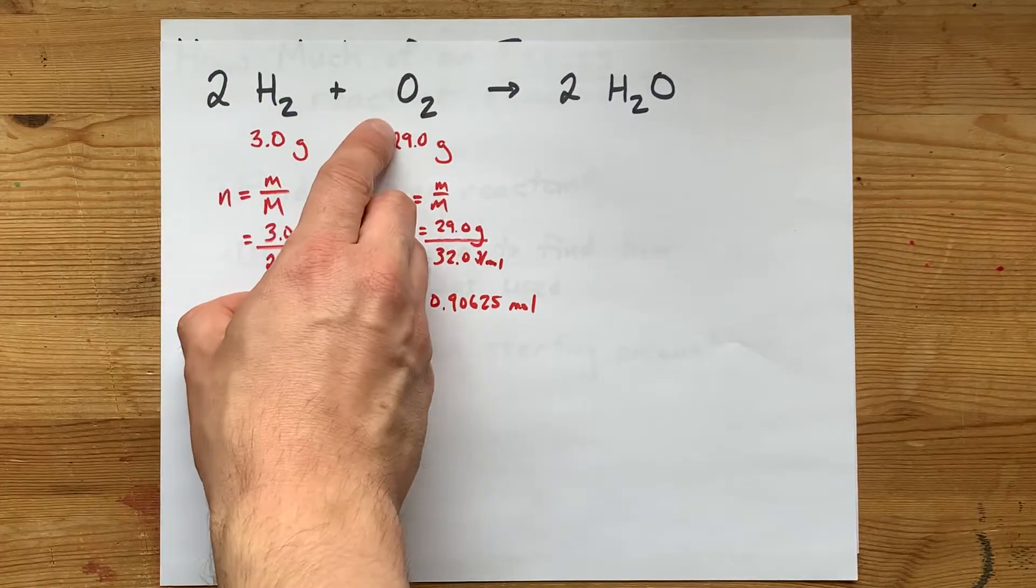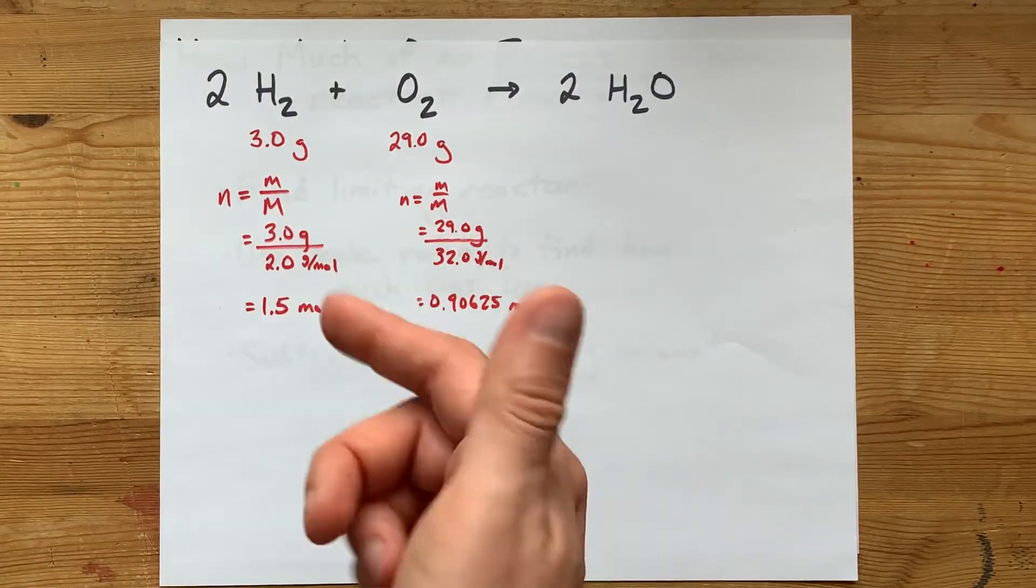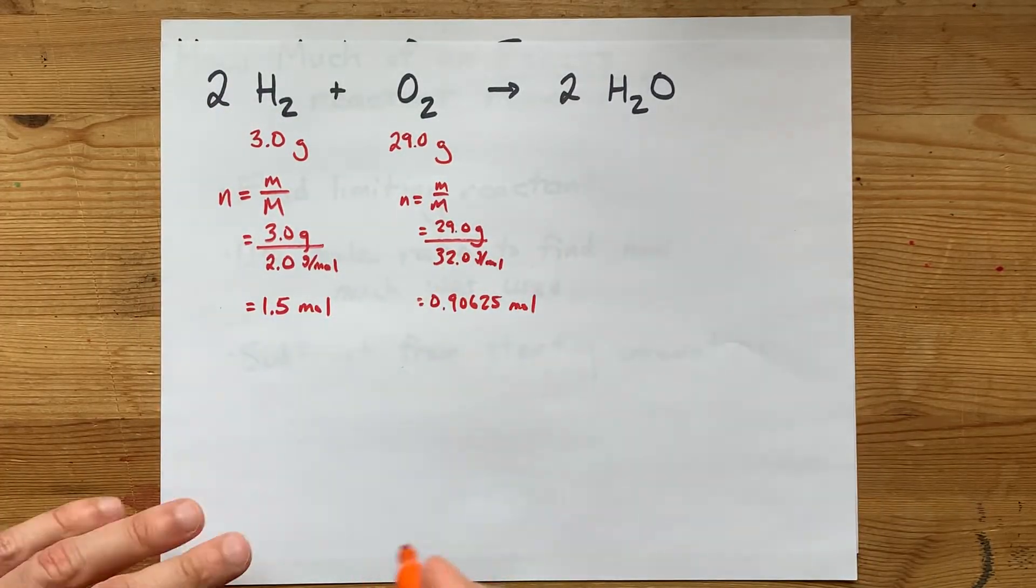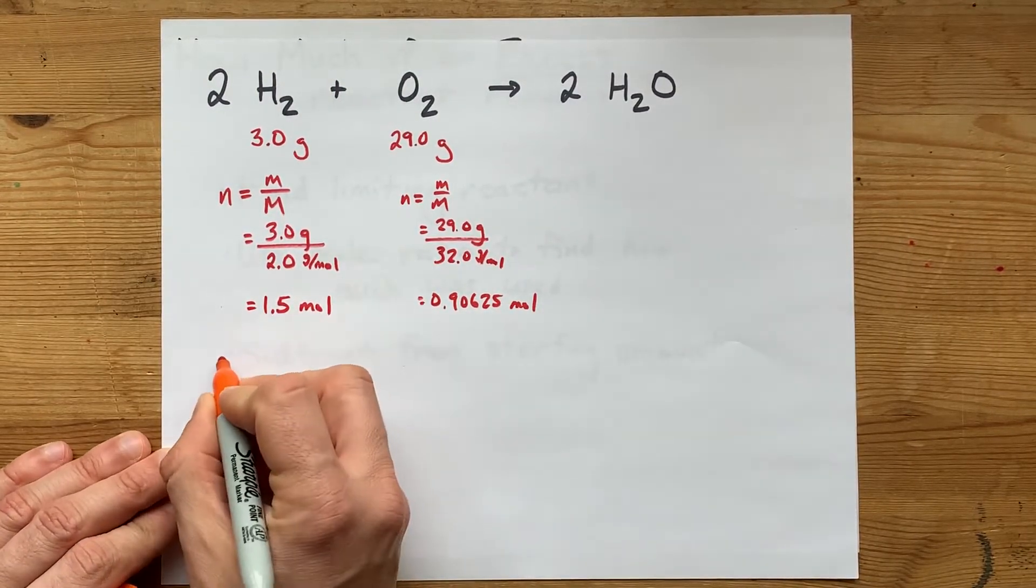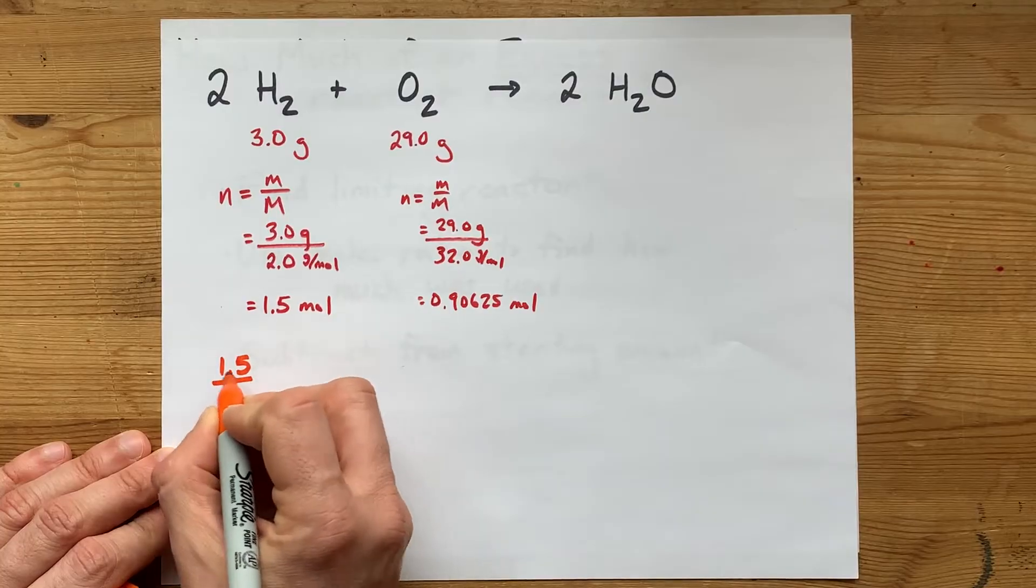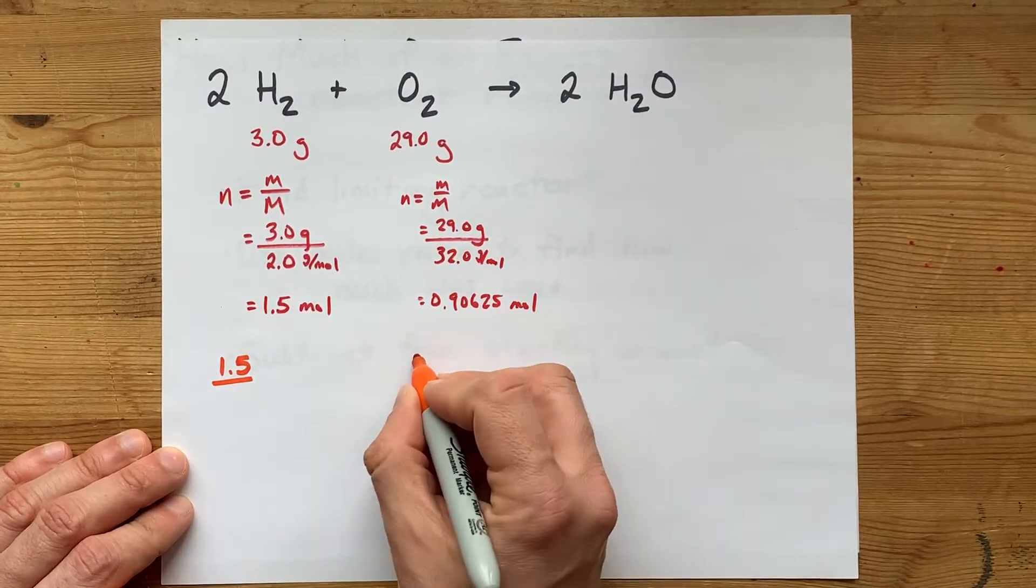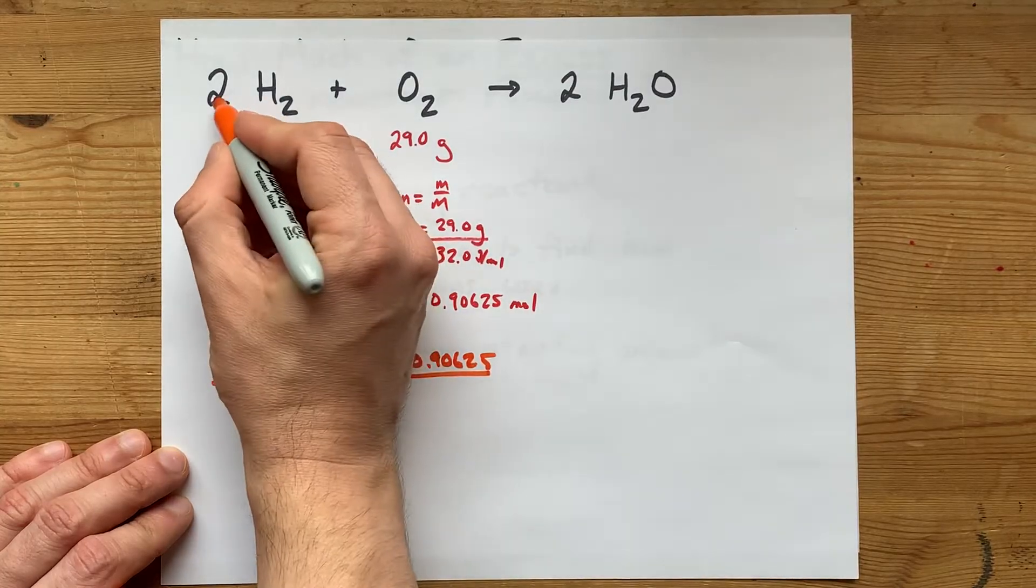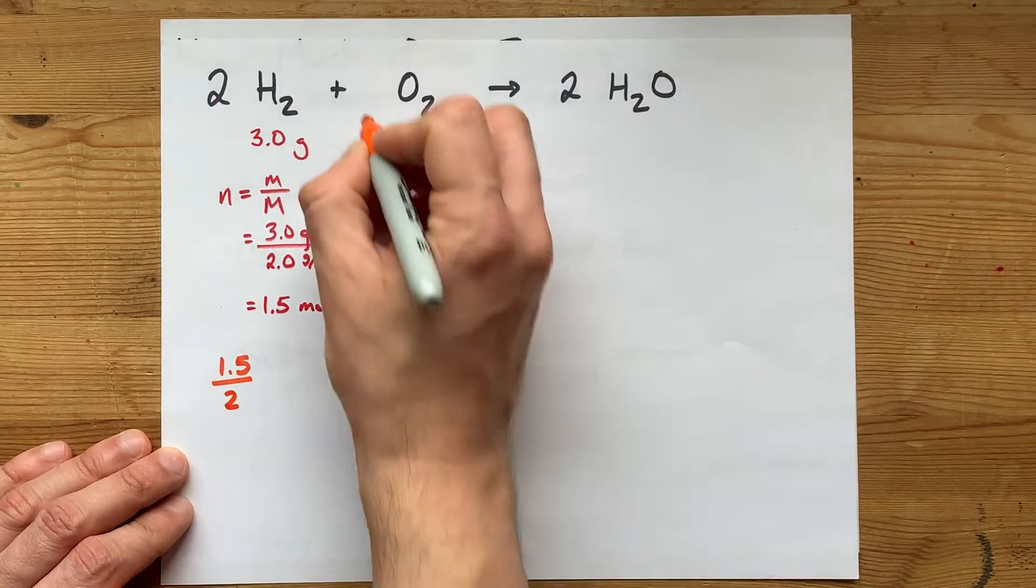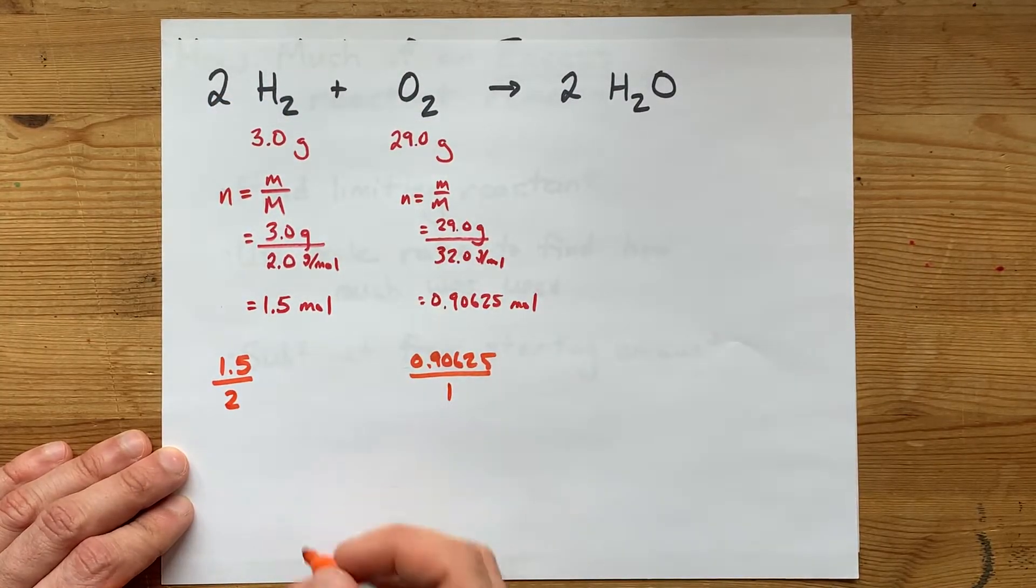The coefficient of two here compared to the coefficient of one is the relative rates of consumption. My trick to find the limiting reactant is to take each of these numbers of moles, 1.5 in this case and 0.90625 in this case, and divide them by the coefficients from the balanced chemical equation.